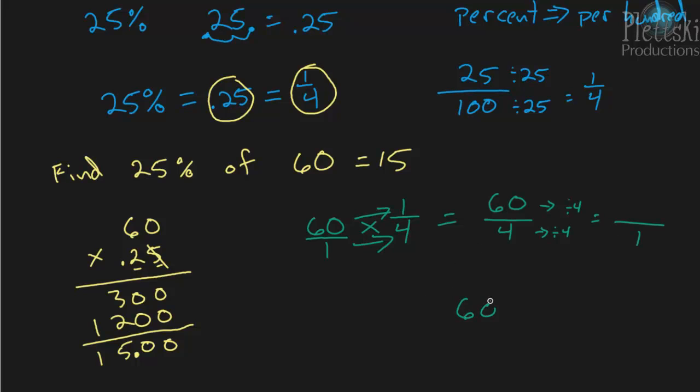So 60 divided by 4. 4 goes into 6 once. And 1 times 4 is 4. 6 minus 4 is 2. And then bring down the 0, and you have 20. So 4 goes into 20 five times. 5 times 4 is 20. And you don't have a remainder. So 60 divided by 4 is 15. So we get 15.